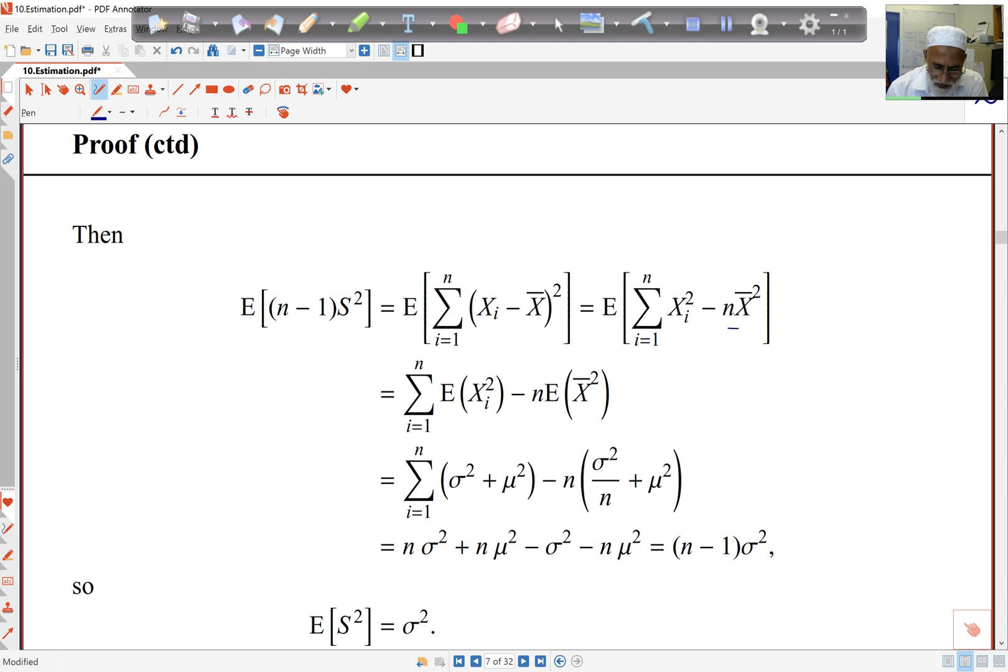Now here, the Xi squareds have the expected value sigma squared plus mu squared from the last slide. X bar squared, the expected value there is sigma squared upon n plus mu squared.